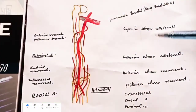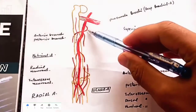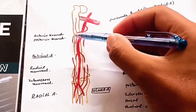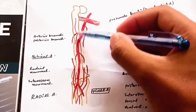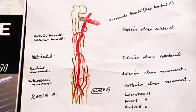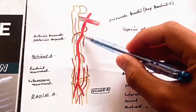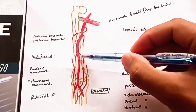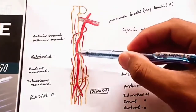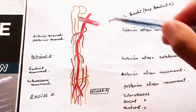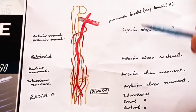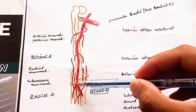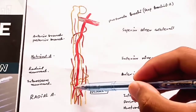The brachial artery gives rise to many branches. The first and largest branch is the profunda brachii artery, which is further divided into the anterior branch and the posterior branch. The second branch is the superior ulnar collateral, the third is the inferior ulnar collateral, and the fourth is the nutrient artery, which supplies blood to the humerus.